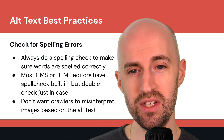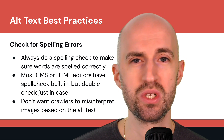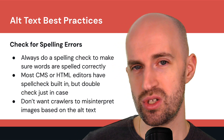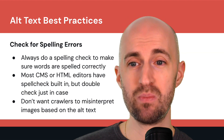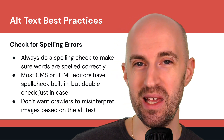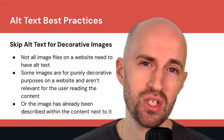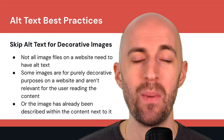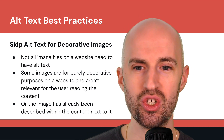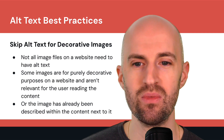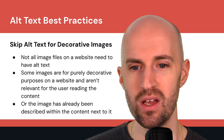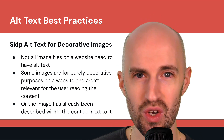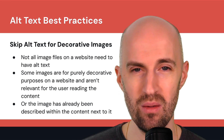Remember to check for spelling errors — that's an obvious one, but always spell-check before publishing. Most CMS or HTML editors automatically spell-check, but double-check just in case, because you don't want crawlers to misinterpret images based on the alt text, especially if the spelling completely changes the meaning of it. Also remember to skip alt text for decorative images. Just because you have an image on a web page doesn't mean you have to have alt text on it — it depends on how the image is used. If it's a background image or purely decorative, like a border, and isn't relevant for the user reading the content, then you don't really need alt text for that. Similarly, if the image has already been described within the nearby content, you don't need to repeat it — Google will keep that in mind.